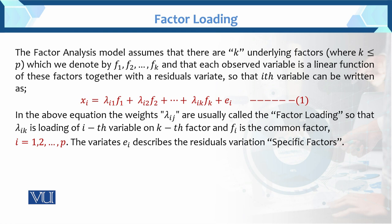Factor loading — basically what do we need to check? Correlation between the factors and the items. The factor analysis model assumes that there are K underlying factors. K underlying factors means that we have the total variables reduced to K factors, where K is less than or equal to P, and P stands for the dimension or the variable, which we denote by F1, F2, up to FK. So we have K factors and P variables, and K is less than the number of variables.